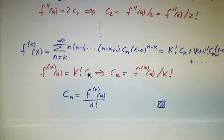And that's what we wanted to prove. If you call it n instead of k, that is the end of Taylor's theorem for analytic functions.